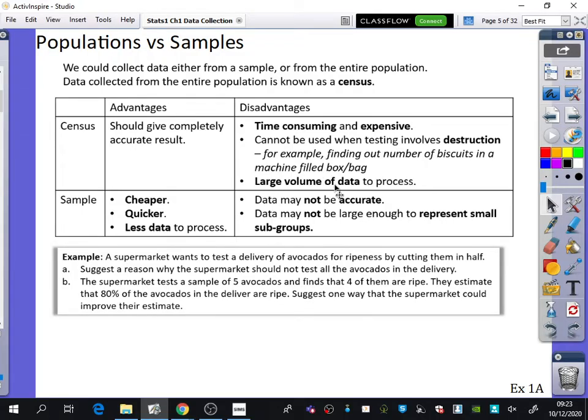Another disadvantage is there's a large volume of data to process, which takes a lot of work. So why do a sample? It's cheaper, quicker, and there's less data to process. But the disadvantage is the data may not be accurate depending on how you've taken the sample.